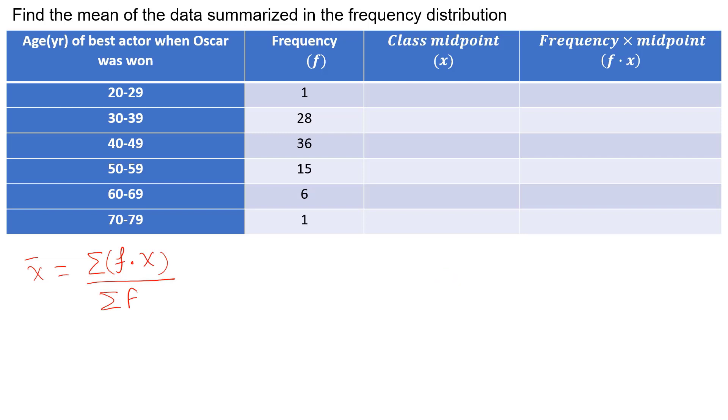So first step is to find the midpoint of each class. First class is from 20 to 29. To find the midpoint, add the upper class limit plus the lower class limit divided by 2. In our case that would be 24.5.